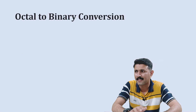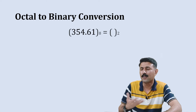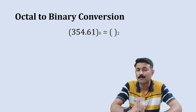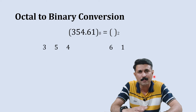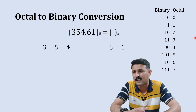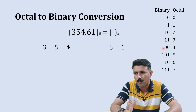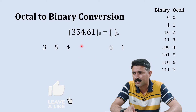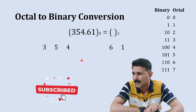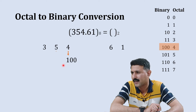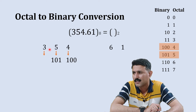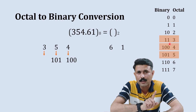Now we are going to move to the next section: octal to binary conversion. The question is 354.61 — we are going to convert this octal number into its binary equivalent. We'll separate the integer and fraction parts, and here we have the binary-octal table. The logic is the same: we require three digits to represent any octal number. Starting with the integer part from the right — the least significant digit is 4. The binary equivalent to 4 is 100, so we write 100. The next digit is 5, and its equivalent is 101, so we write 101.